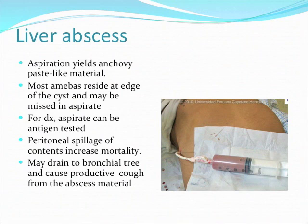A very characteristic feature of this organism is it can cause liver abscesses. You can aspirate the abscess and see anchovy paste-like material, as in the picture shown. When you see an abscess, you don't really need to aspirate every time — you can just give treatment and it can absorb by itself. Because if you cause spillage of the content, it can cause peritonitis and increase mortality. You can use the fluid for antigen detection to make the diagnosis. When the abscess is very large and breaks through to the lungs, you can have a cough with productive material that is basically the content of the abscess.